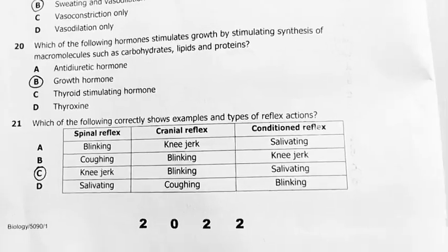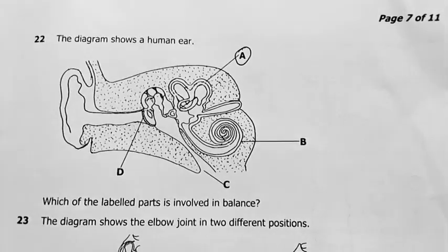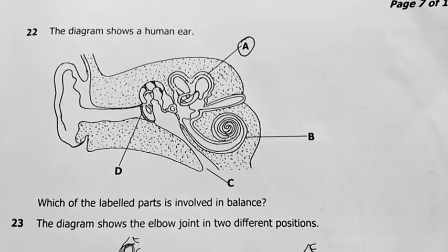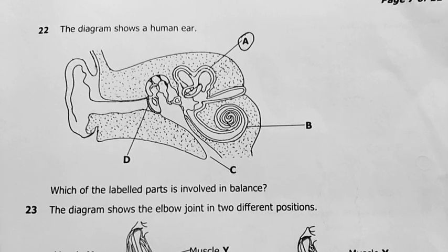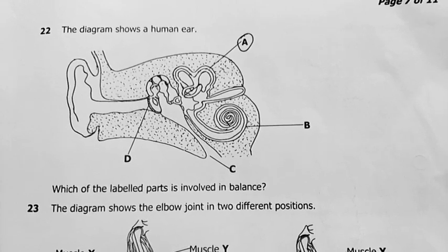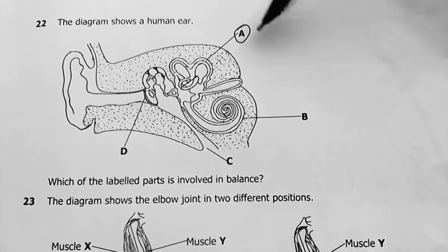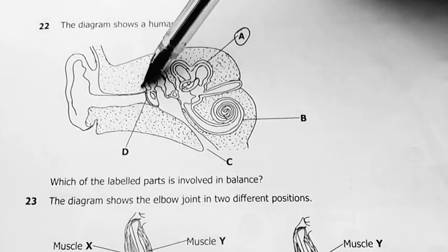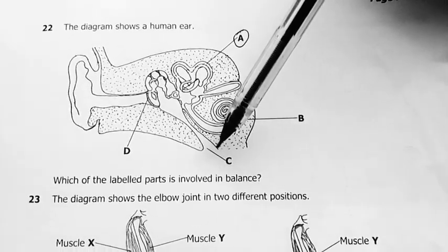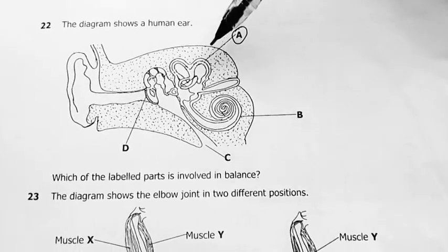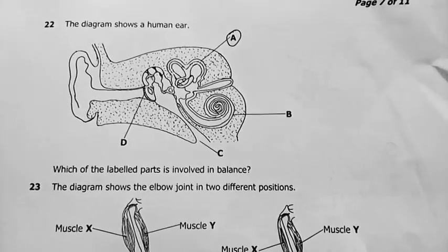Question 22: the diagram shows the human ear. Which of the labeled parts is involved in balance? The semi-circular canals — not the cochlea, not the eardrum, not the Eustachian tube, but the semi-circular canals. The answer there is A.